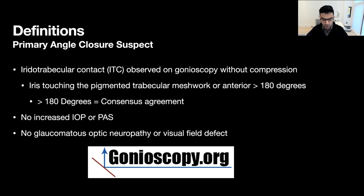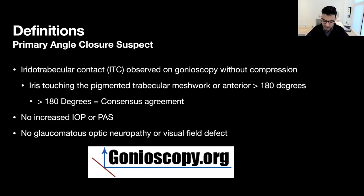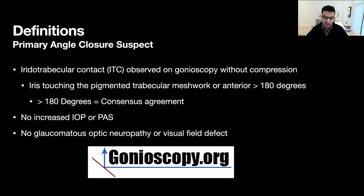In PACS, there can be no increased intraocular pressure, no peripheral anterior synechiae, and the patient cannot have any existing glaucomatous optic neuropathy or associated visual field defect. For those still mastering gonioscopy, I heavily recommend gonioscopy.org — a great academic resource. Regarding the 180-degree rule, the definition is based more on consensus agreement. We have no formal scientific reason why 180 degrees puts patients at more risk than 90 degrees, but logically that would seem to be the case. As patients age and their lenses become bigger, the risk for angle closure increases.